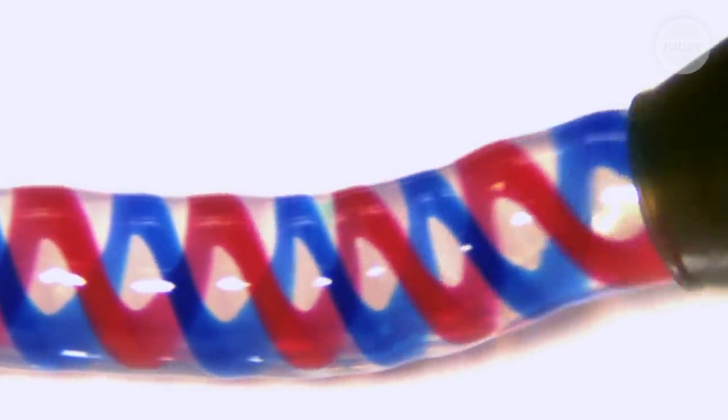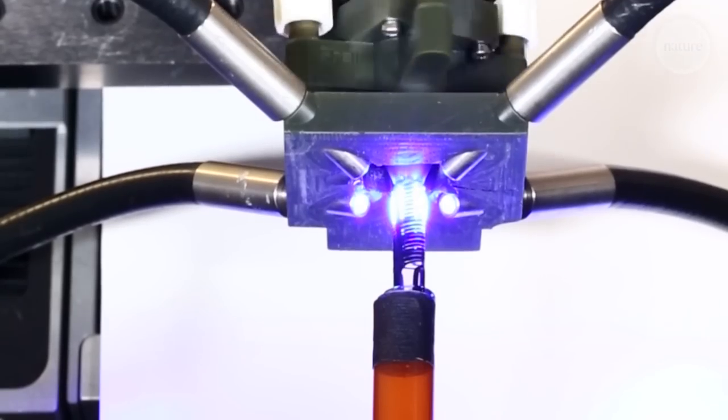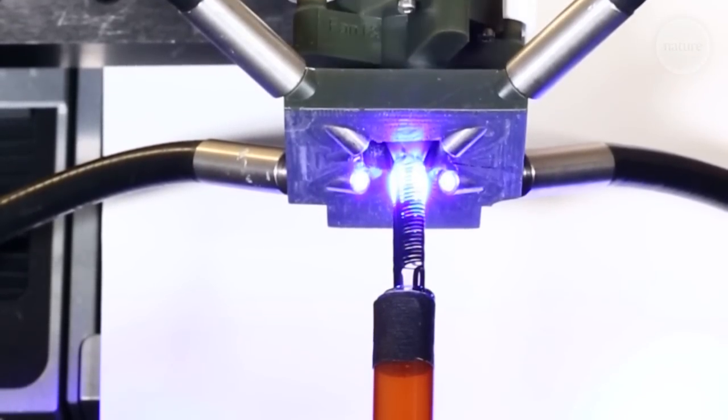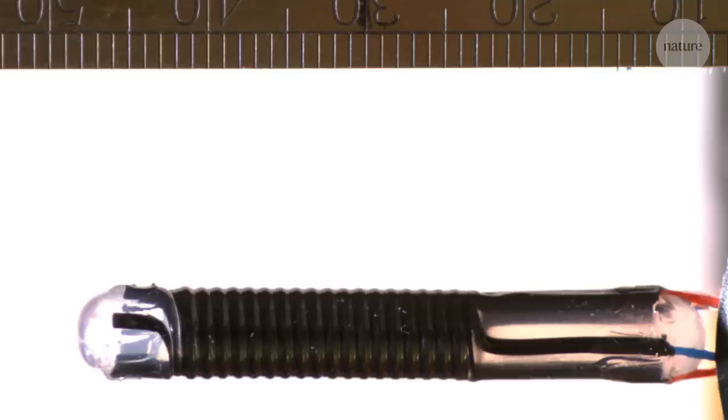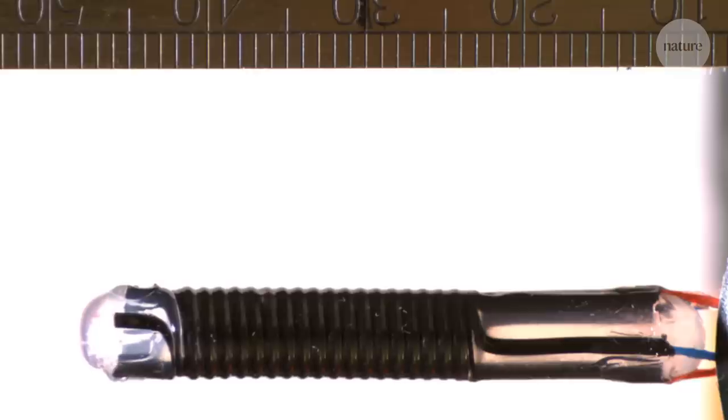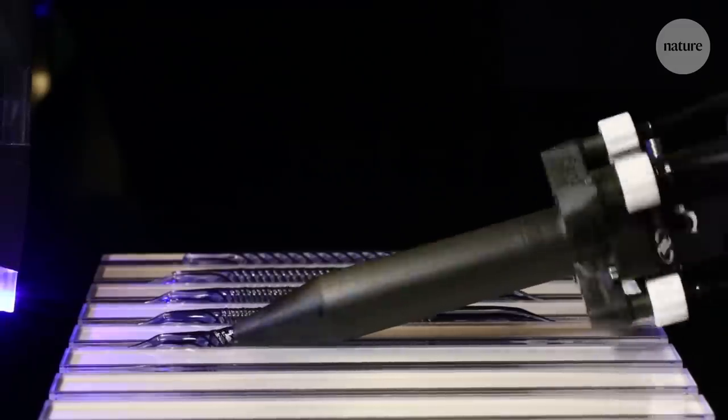For example, helices have particularly useful properties. This filament is made from special conductive and dielectric inks. Because of the helix shape, when a voltage is applied across it, the whole thing compresses like an artificial muscle. For this to work, the printing has to be extremely accurate and free of errors.